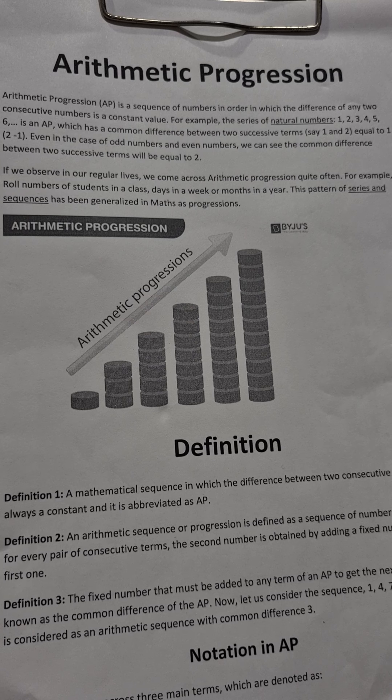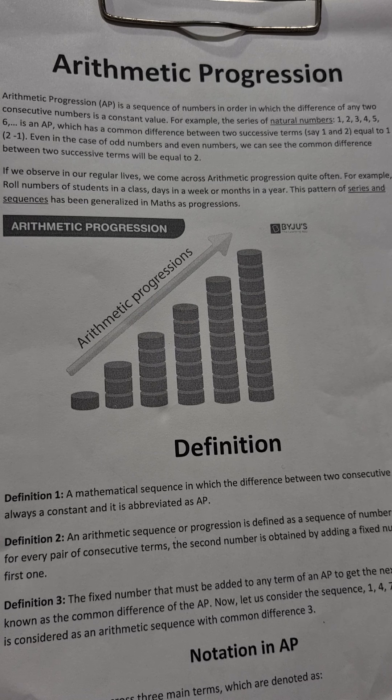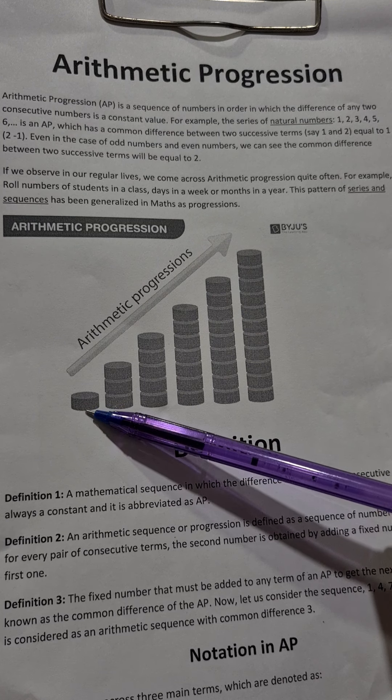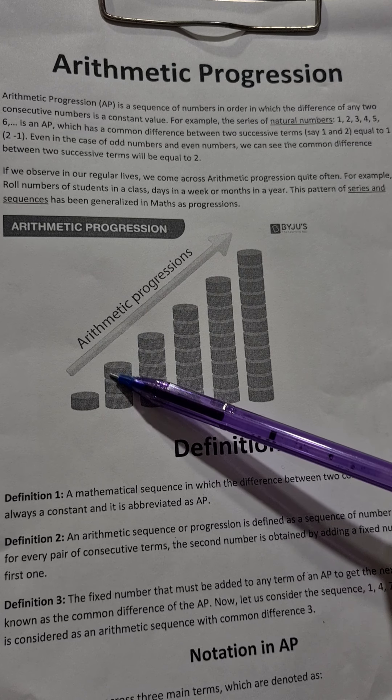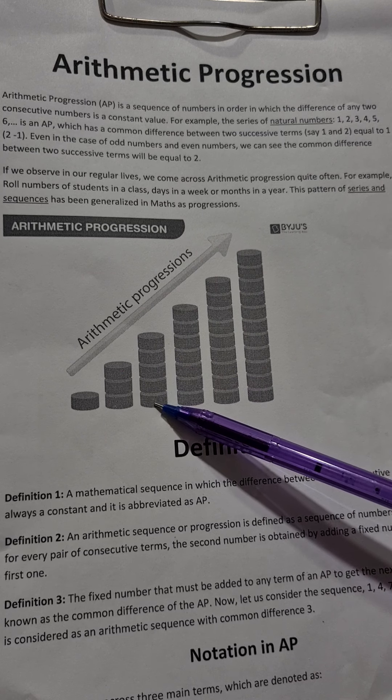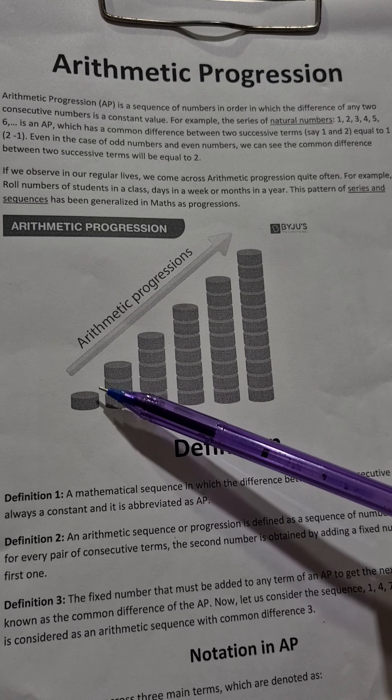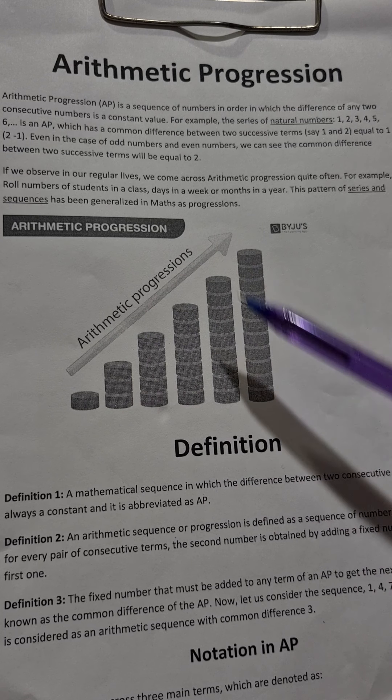First of all, we will understand what is AP. This can be understood by this diagram. In this diagram, in the first column there is only one coin. In the next, there are three coins. And in the next, there are five coins. And in the next, there are seven coins. It means two coins are increasing in next columns.